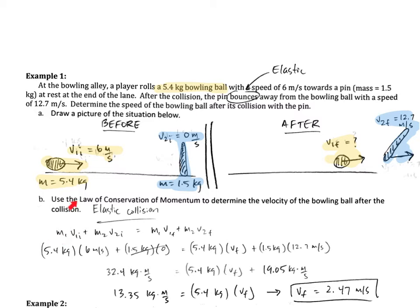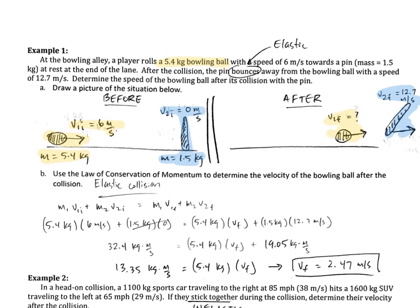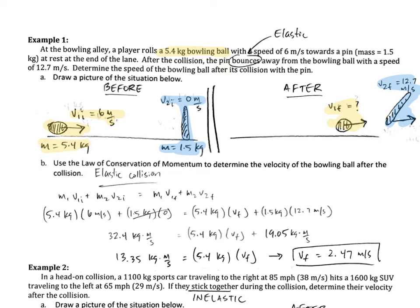Mass and velocity of object 1, which is the bowling ball, plus the mass and velocity of object 2, which is the bowling pin before the collision, is going to be equal to the mass and velocity of the bowling ball after, plus the mass and velocity of the bowling pin after. Noting that since the bowling pin has no velocity to begin with, it has no momentum. Doing a little bit of algebra, we find out that the velocity of the bowling ball afterwards is 2.47 meters per second.